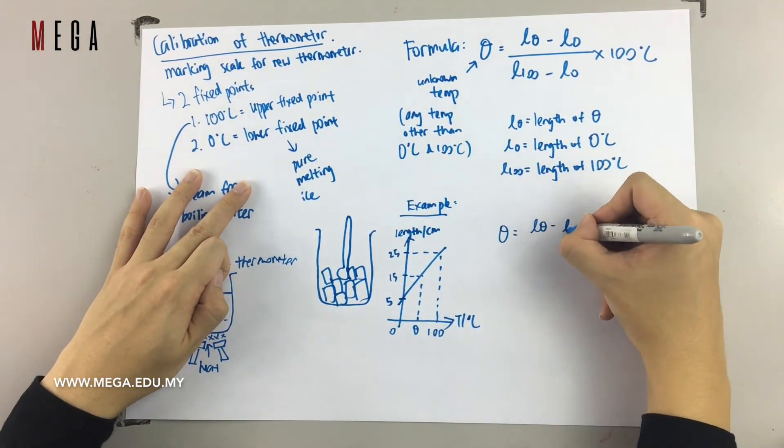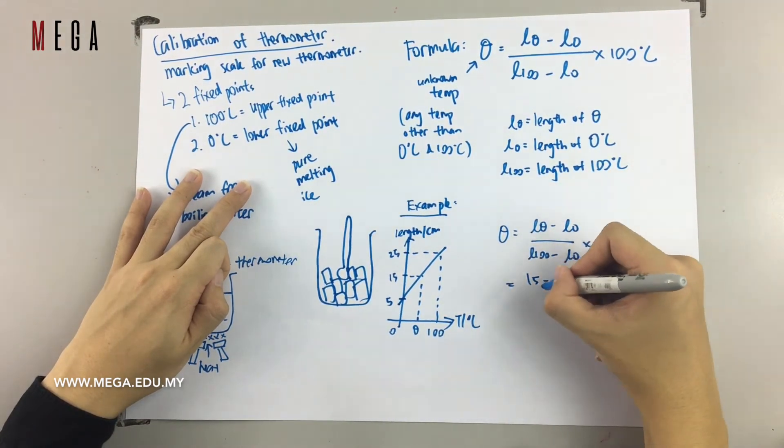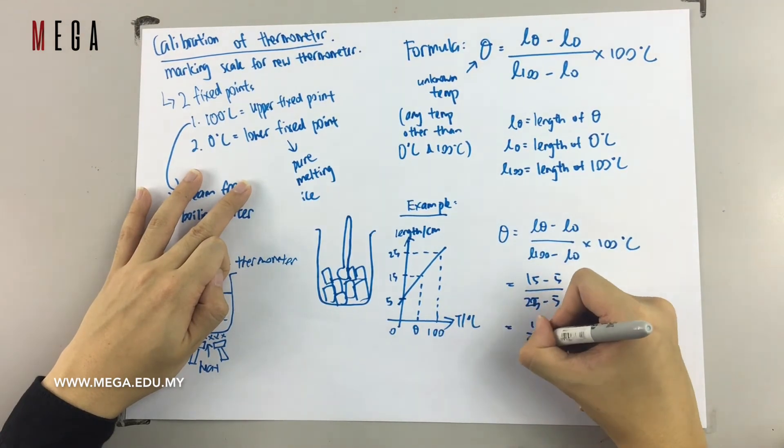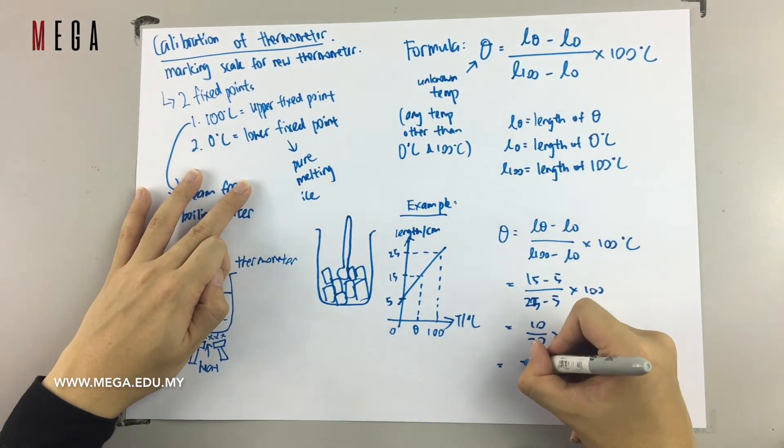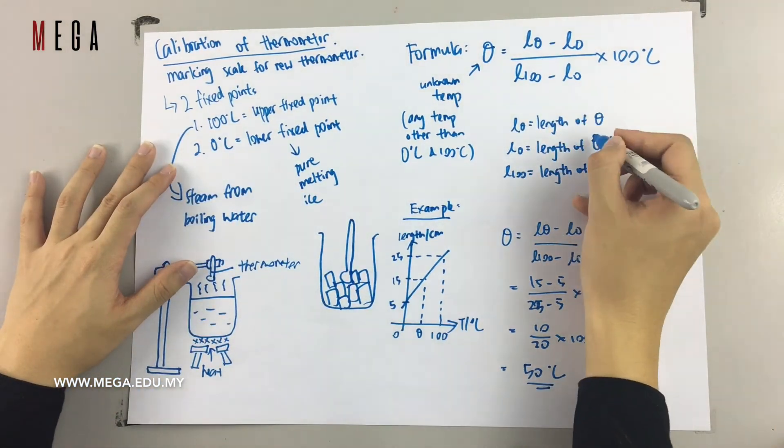So from this formula, you can check. What you're going to write is 15 minus 5 over 25 minus 5 times 100 degrees Celsius. And at the end, you get 10 over 20 times 100 degrees Celsius, which means you get the final answer of 50 degrees Celsius.